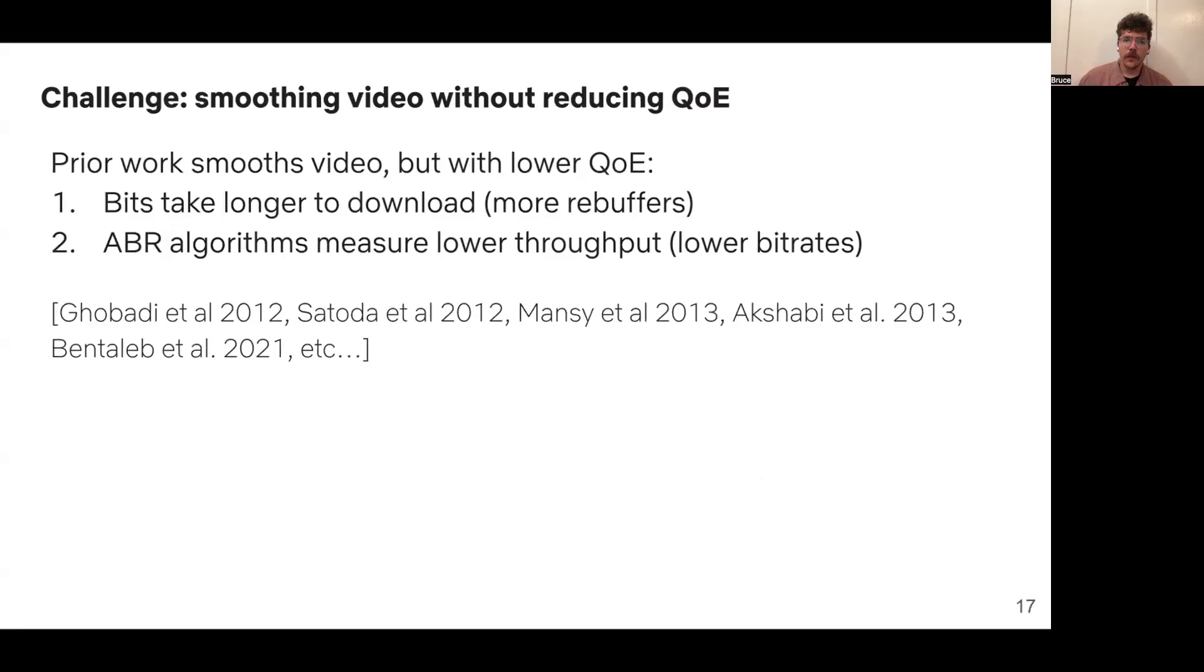The challenge in doing this is smoothing video traffic without reducing QoE. And now that we've talked about smoothing video traffic, it's clear where this QoE loss might come from. One is because we're downloading things slower, they'll take longer to download, and so we could increase the probability of rebuffers. Because we are downloading slower during these on periods, ABR algorithms will also measure lower throughput, and so they could switch down to lower bitrates unnecessarily. There's been a whole bunch of prior work on smoothing out video traffic in more than the last decade, but none of this work is able to smooth out video traffic while maintaining QoE.